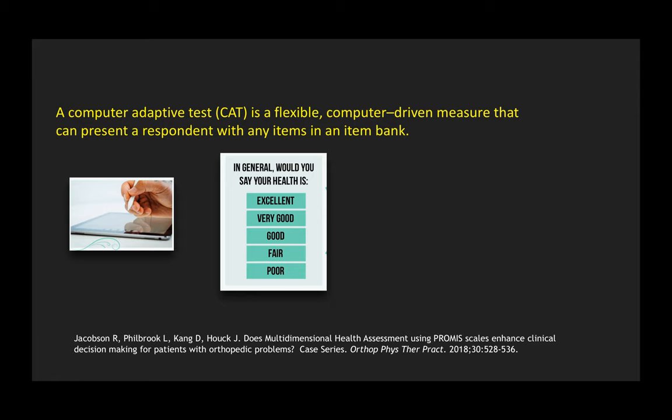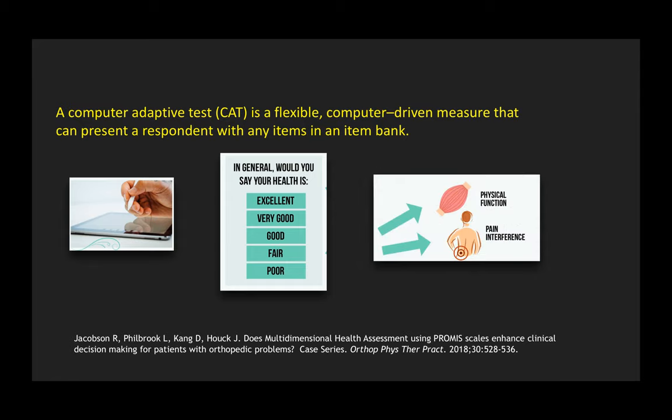It's selecting the items from over 200 questions or items in the physical function item bank. Having all of these items enables the algorithm to generate scores for both high and low function and provide scores with precision. This all occurs in less than one minute.